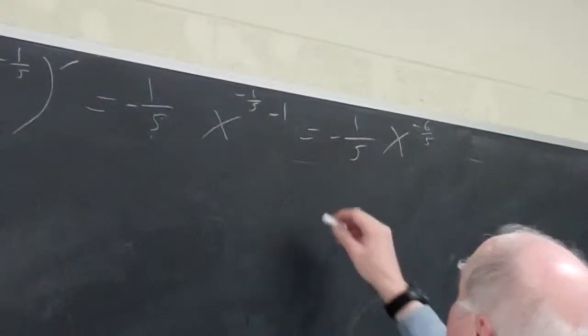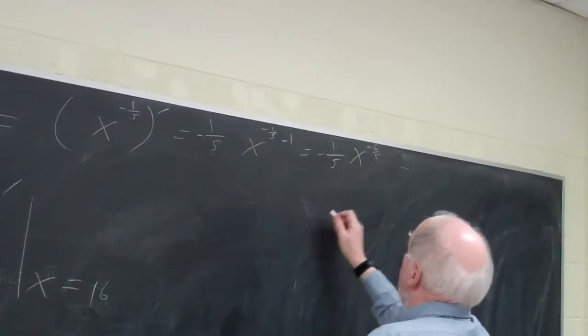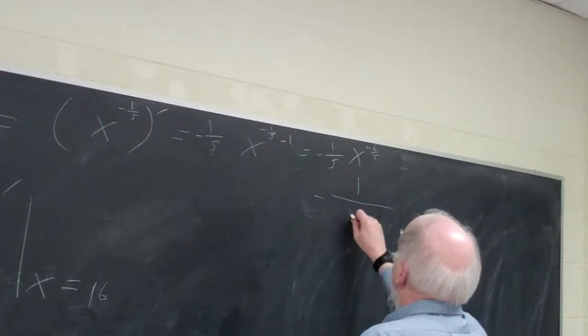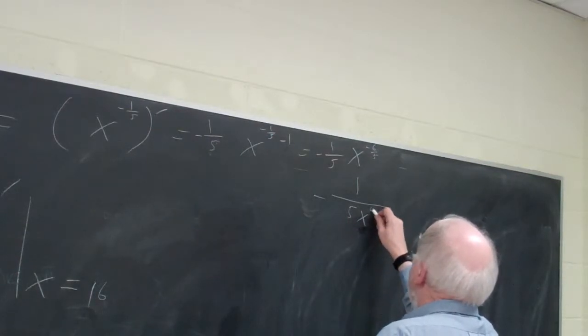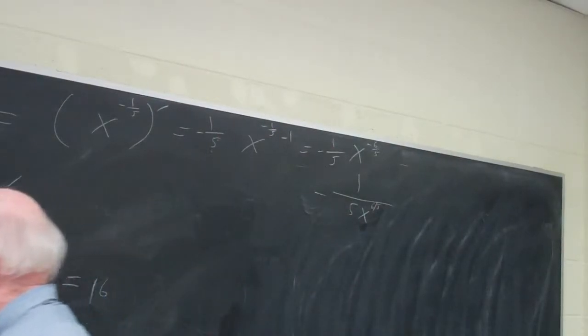Again, if I bring it down, I'll get my answer: negative 1 over 5 times x to the 6/5 power. That's a little better because we can evaluate it.